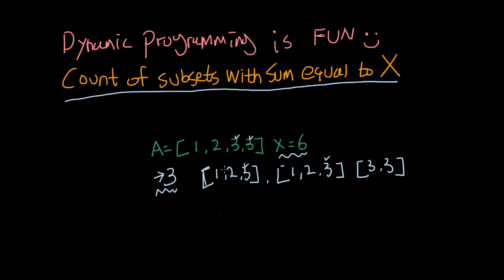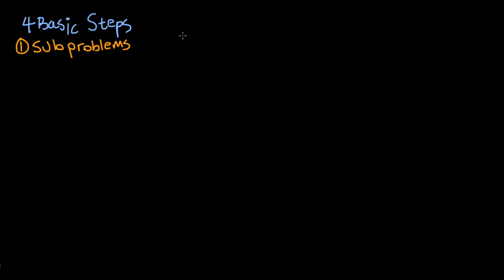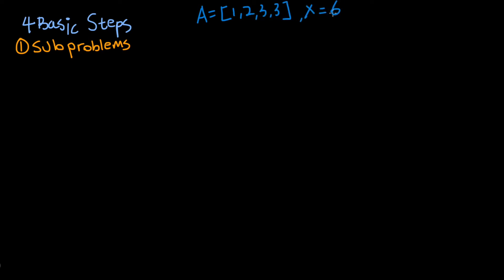Let's talk about four basic steps to solve dynamic programming. Number one step is to find out your sub-problems. For example, with array [1, 2, 3, 3] and X equal to six, there are three types of sub-problems to consider.